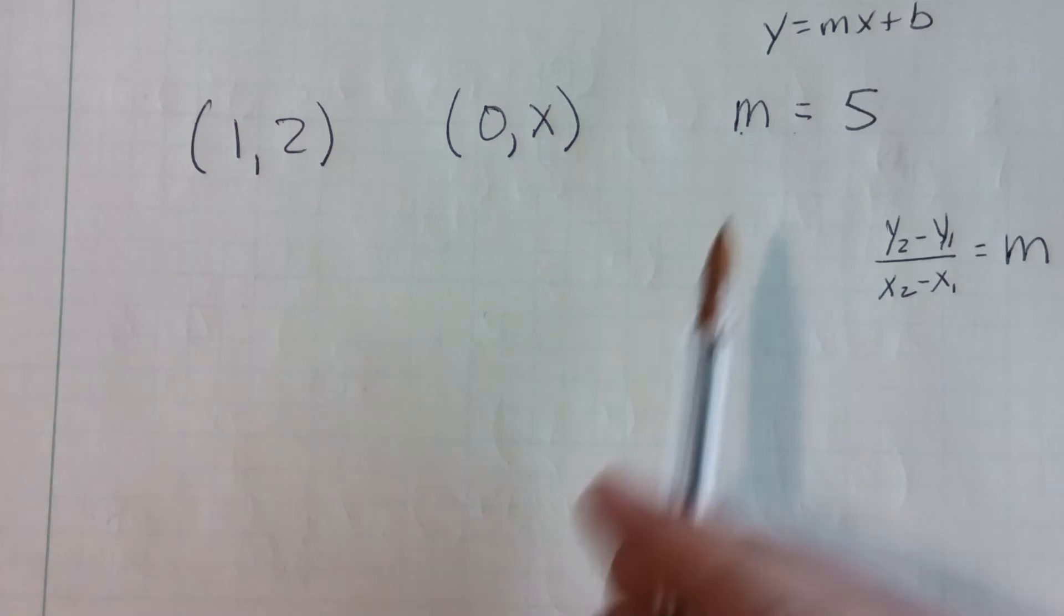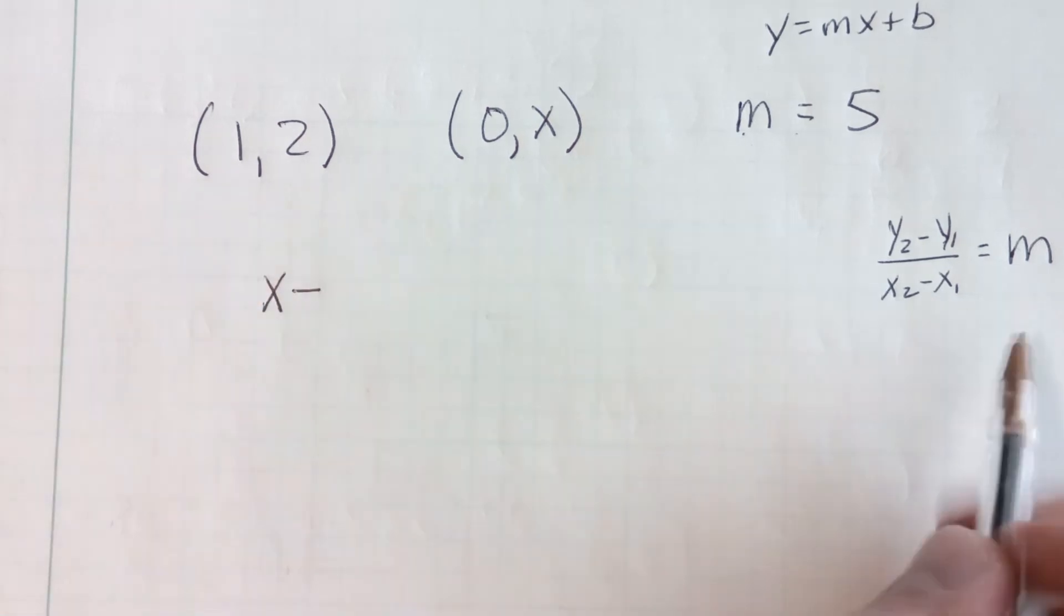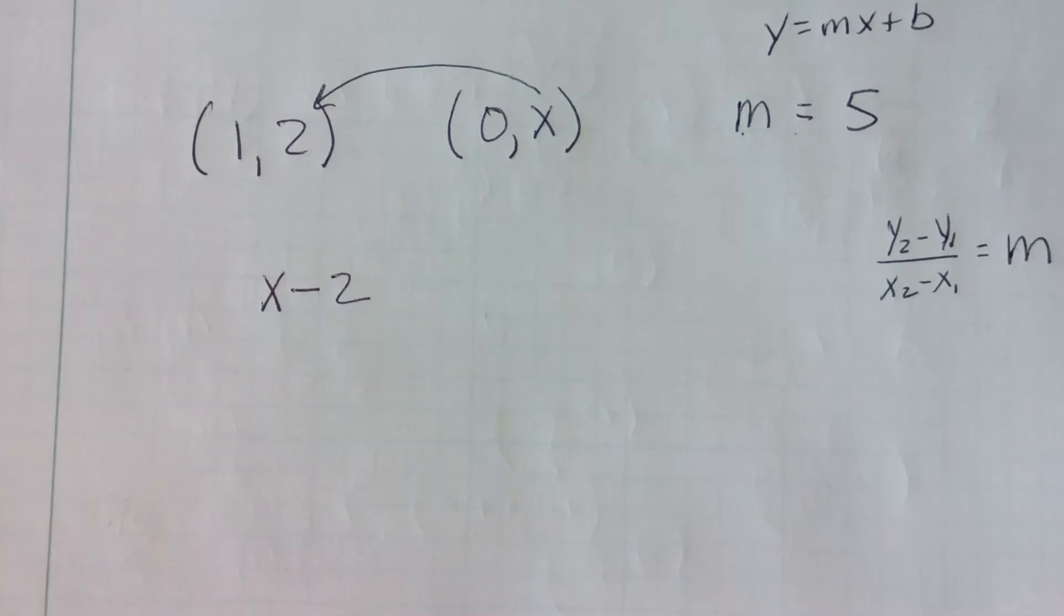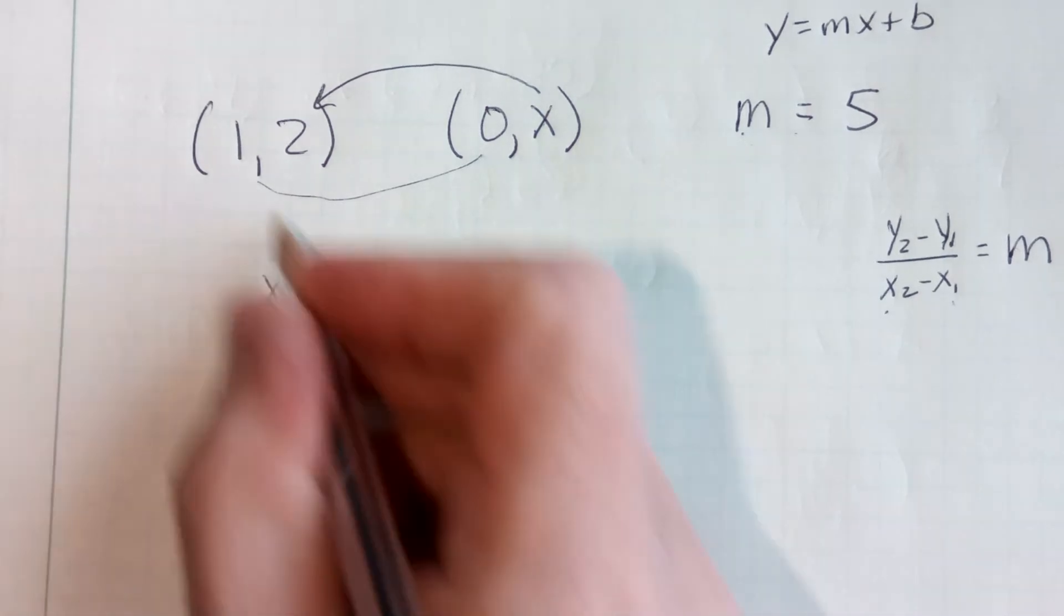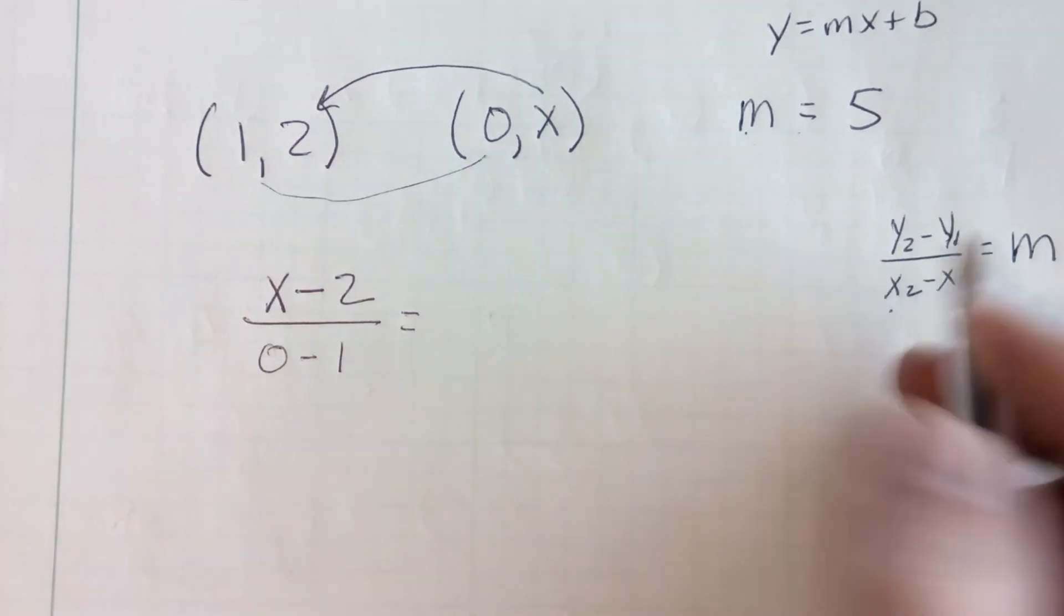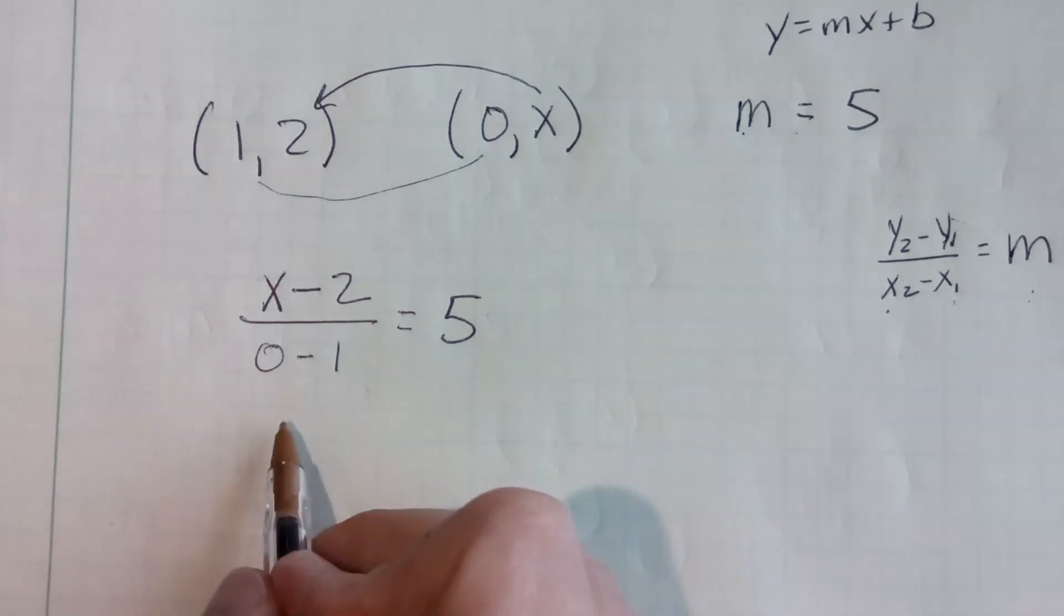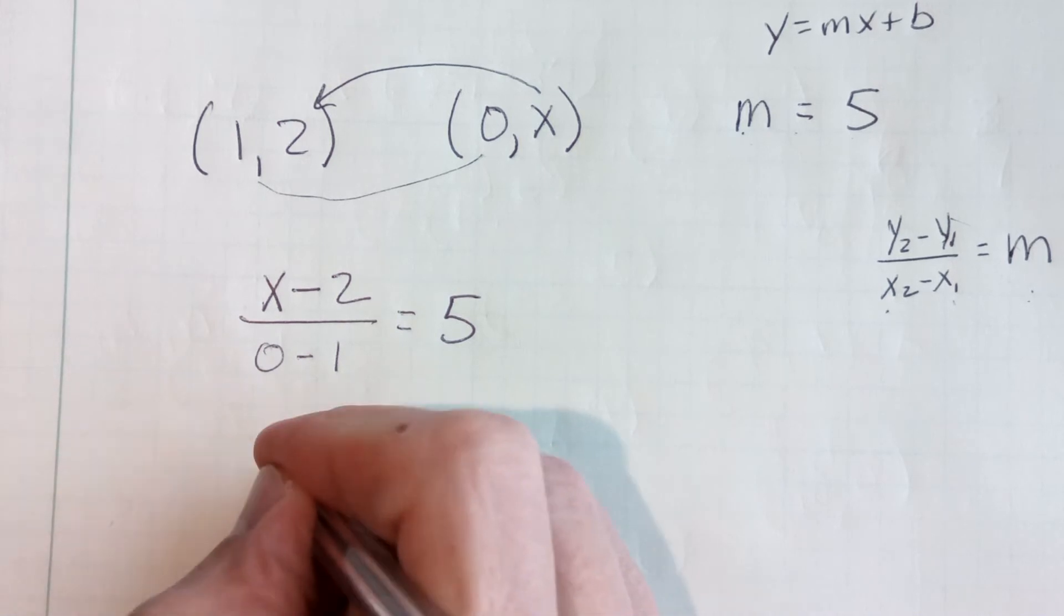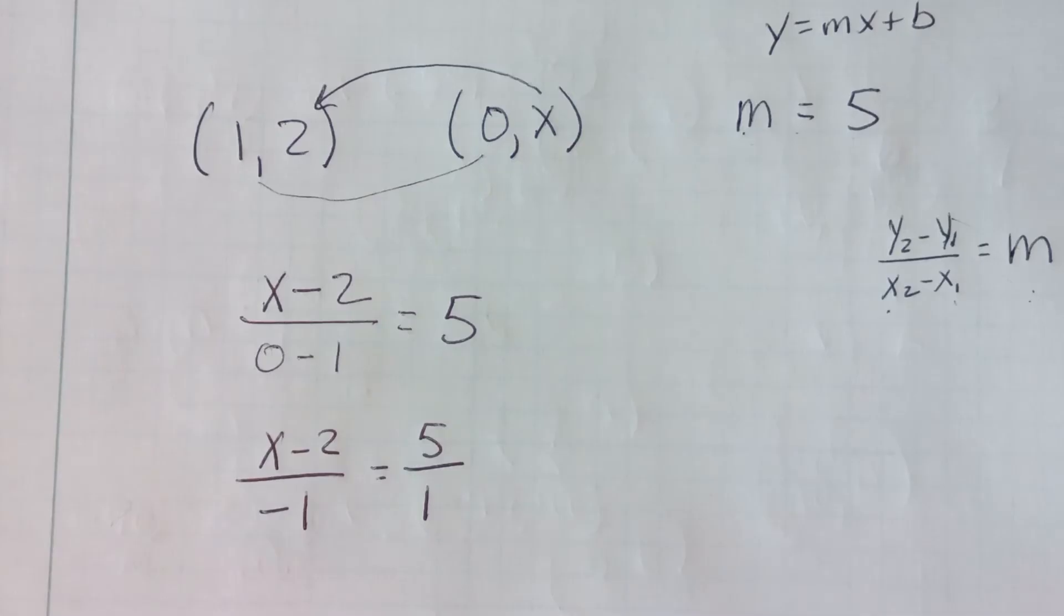Okay? So do I know my second y value? Well, I don't. It's x. So I'm going to go x minus my first y value, which is 2. So I'm doing the y2 minus the y1 over the x2 minus the x1. Well, the x2 is 0 minus 1, and that equals my slope, which is given equals 5. So now I'm going to start to reduce. First of all, in other words, if this hadn't been a 0, I'd write x minus 2 over negative 1 equals, and I'm going to write this as a fraction, 5 over 1. That's the same as 5.